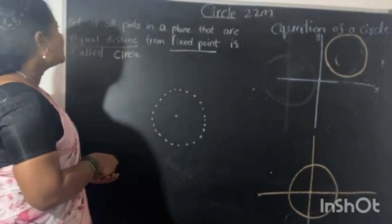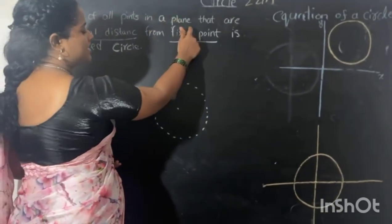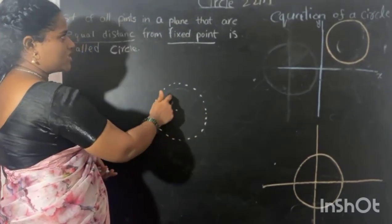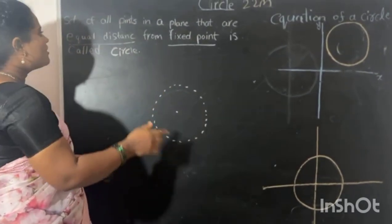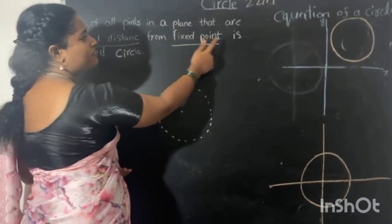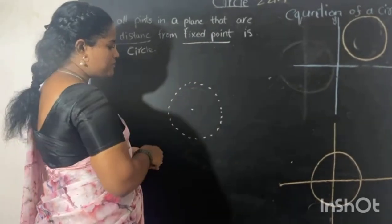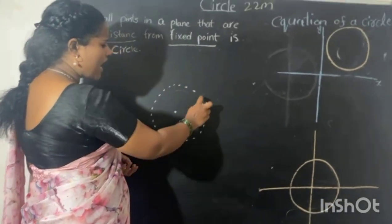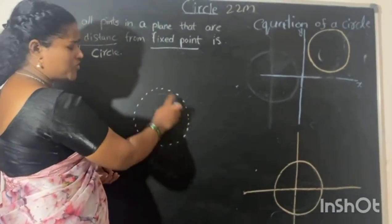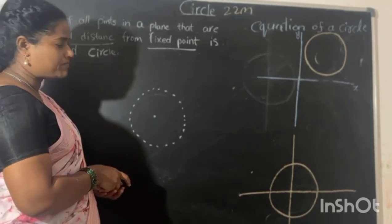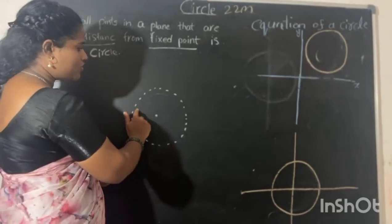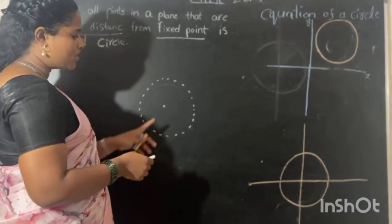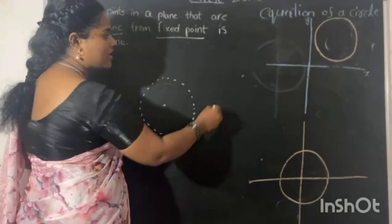A circle is a set of all points in a plane. There are some points in a plane that are at equal distance from a fixed point. We have equal distance from a fixed point.